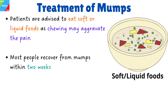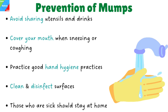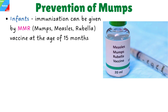Most people recover from mumps within two weeks. The following measures can be taken to prevent mumps: avoid sharing utensils and drinks; cover your mouth when sneezing or coughing; practice good hand hygiene; clean and disinfect surfaces; and those who are sick should stay at home. An infant has maternal immunity for one year.